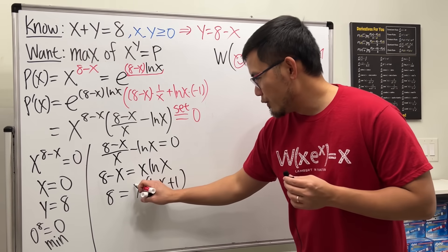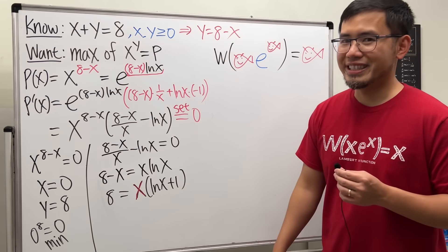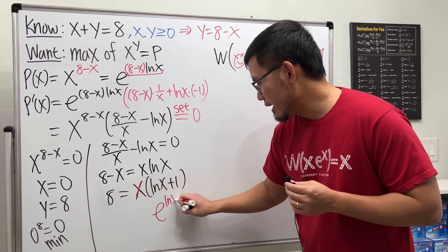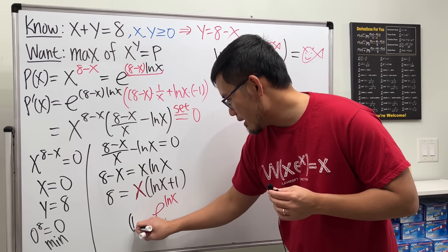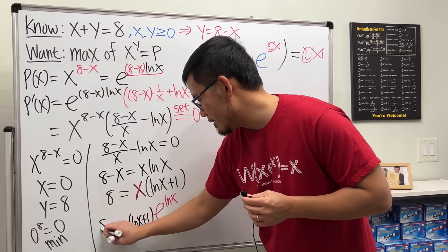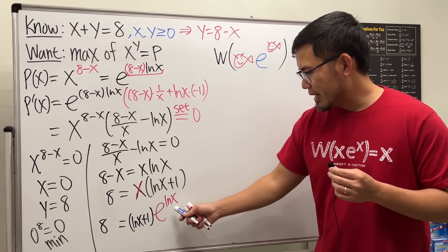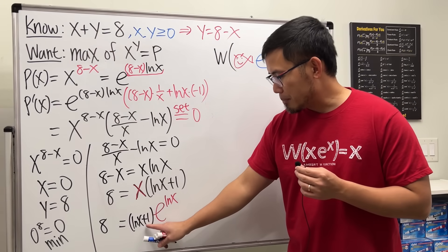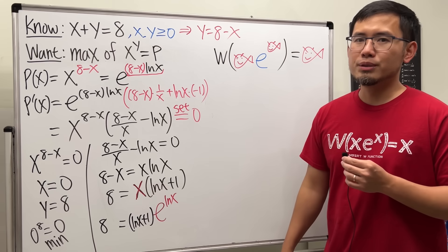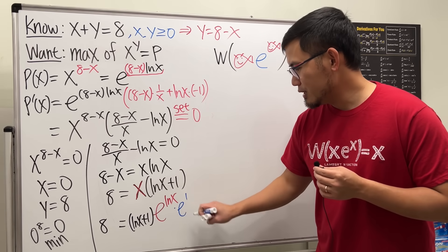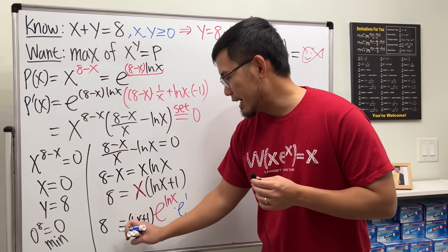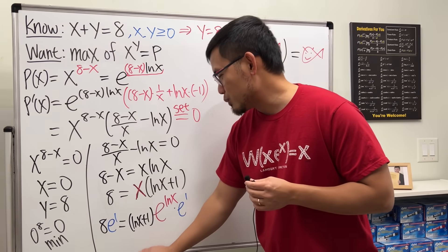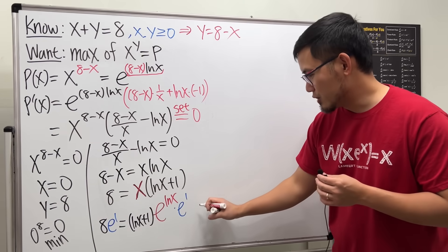Now, for this x, we do the usual trick. Because we really want to introduce the e, we write x as e to the ln x power. So we have e to the ln x, times (ln x plus 1), equals 8. We really want the exponent to also have a plus 1, so we multiply both sides by e to the first power. Adding the exponents gives us lnx plus 1 in the exponent, matching the coefficient out front — and that lets us use the Lambert W function.